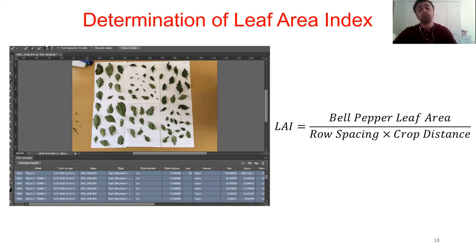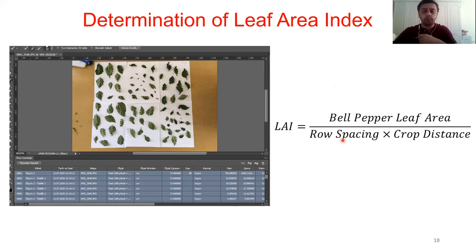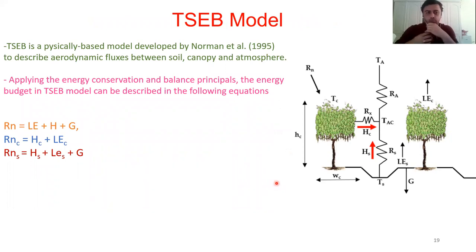Ground LAI measurements were carried out by destructive sampling. Bell pepper crops were sampled from each experimental plot separately. Leaves were removed, placed on white paper with a scale, a photo was taken and sent to software that recognized the leaf edges. We then calculated the total leaf area of each plot and divided it by row spacing and crop distance to obtain the leaf area index value.